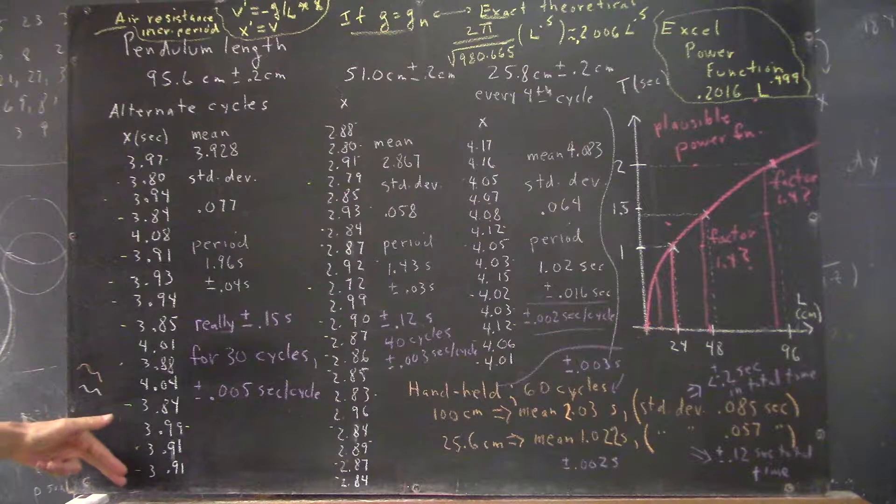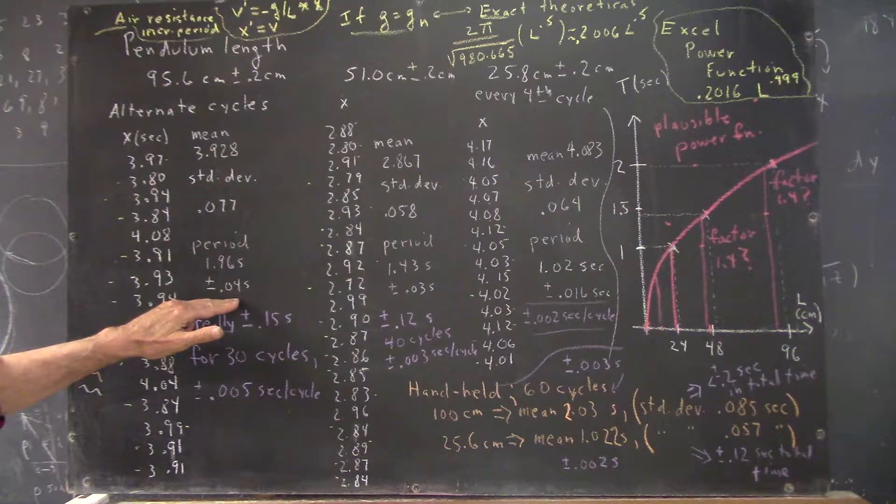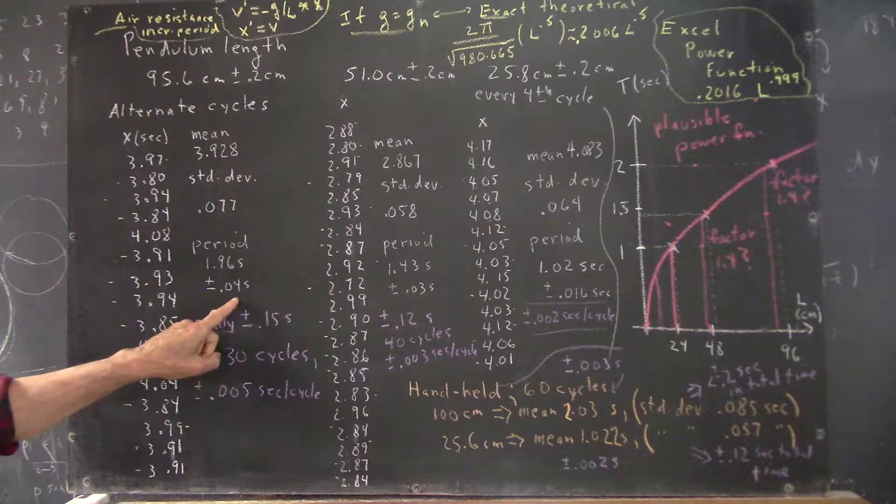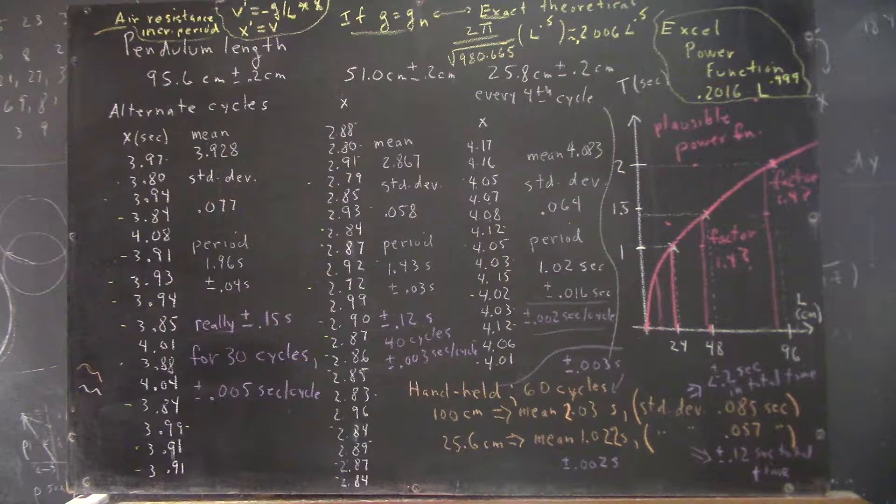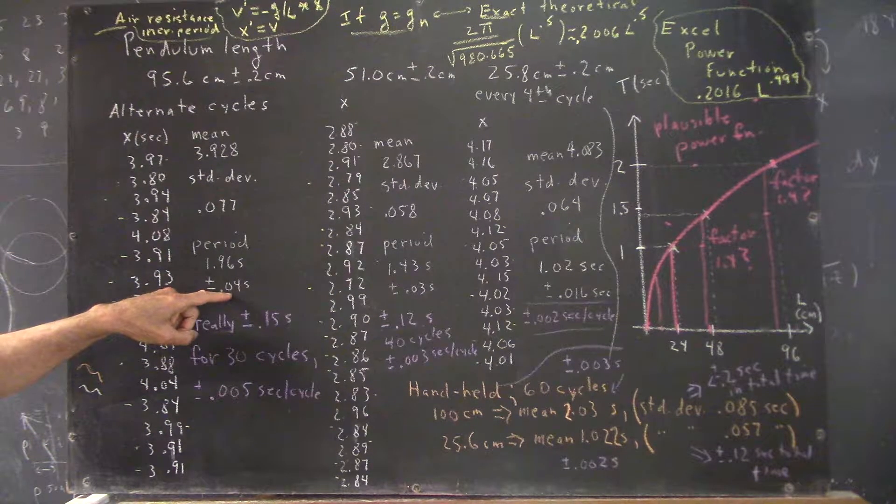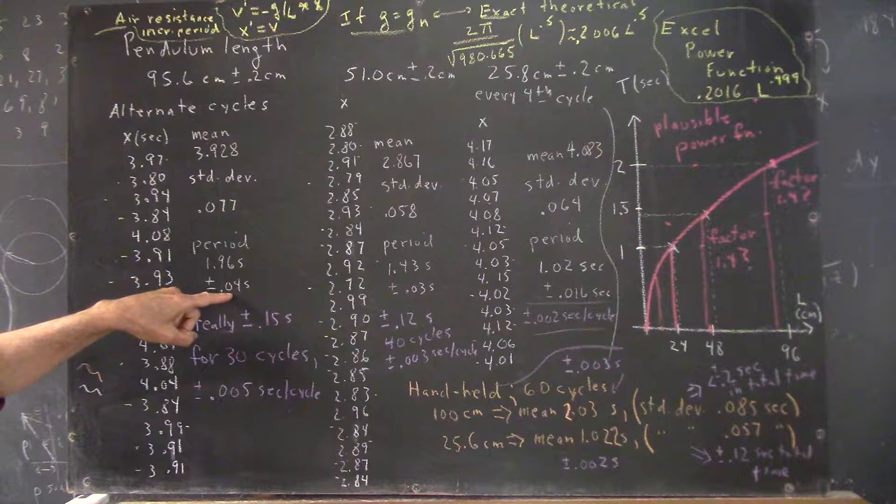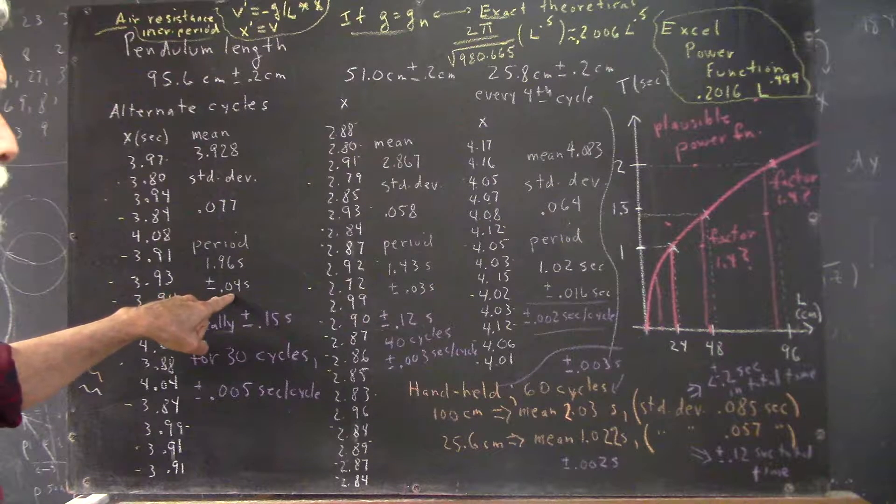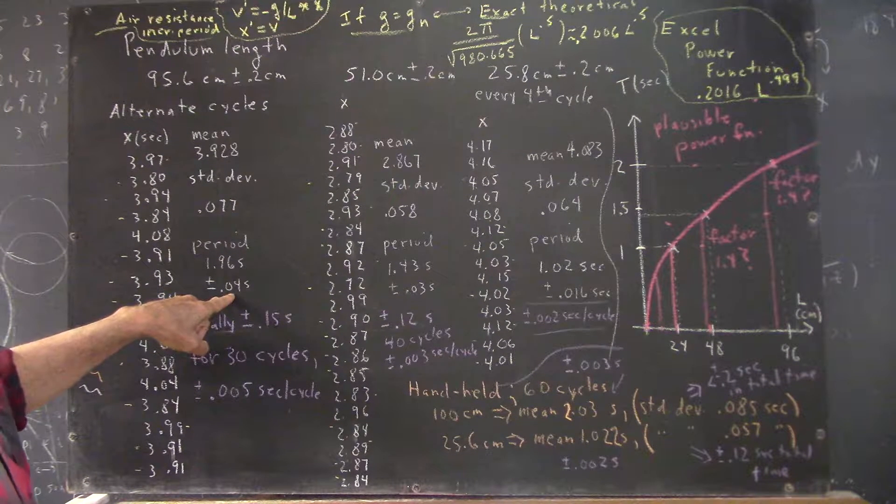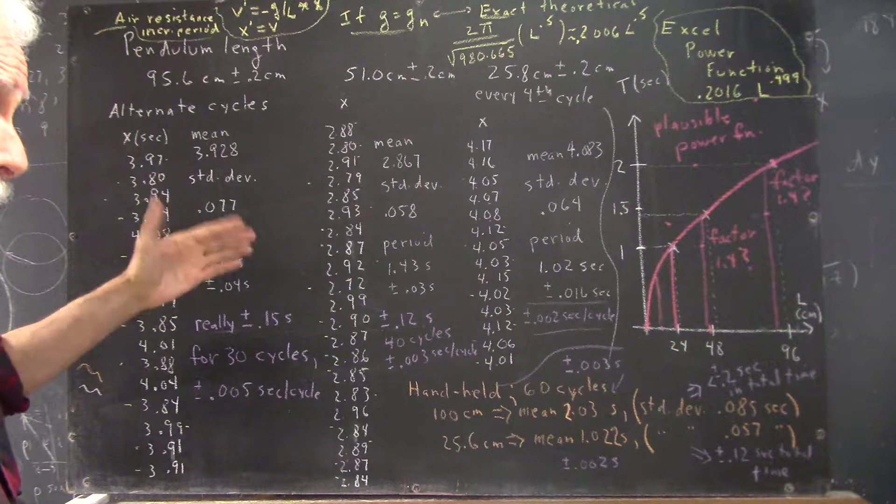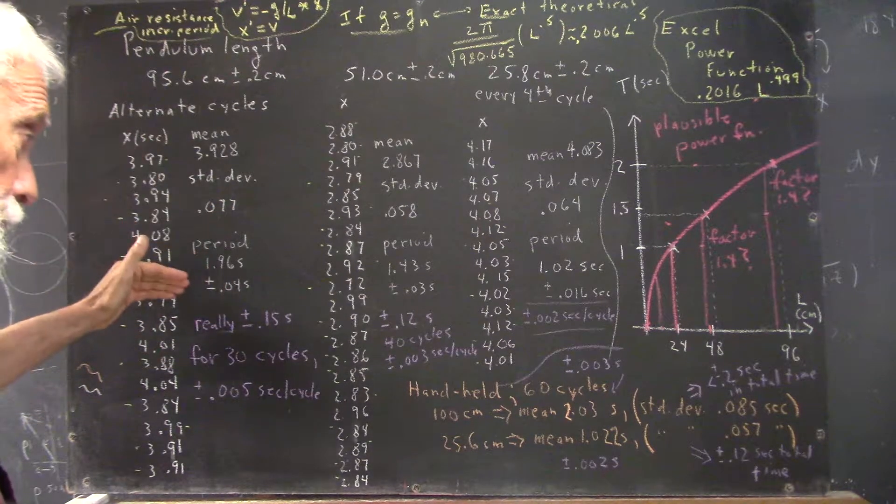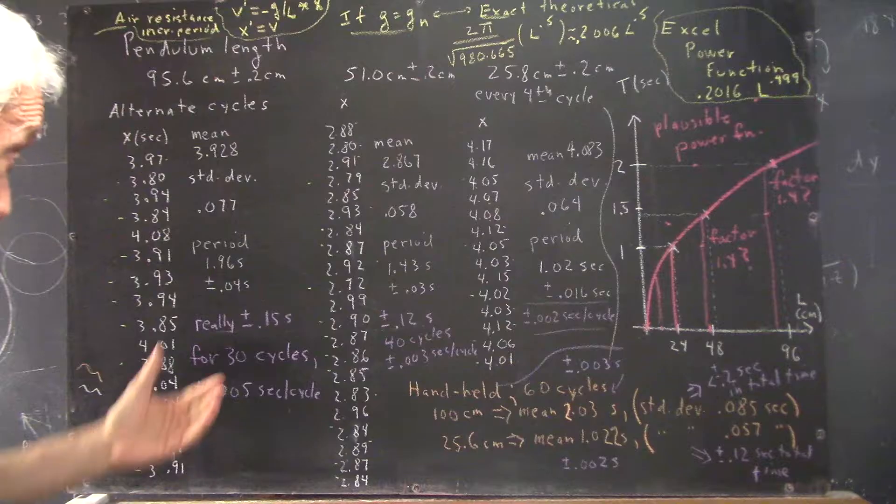So, if these are independent timings, we're stuck here, but we can actually reduce this 0.04-second uncertainty using the standard deviation of the means, which I'm not going to talk about. That's just something that you'll encounter. You can look it up if you like.